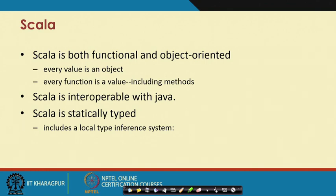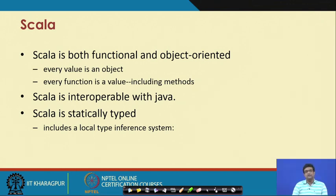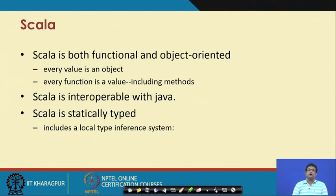Scala is both a functional and object-oriented programming language. Every value in Scala is an object, and moreover every function is a value and hence an object, including the methods which are part of objects. Scala was designed on top of Java, so you will see a lot of derivatives from Java. Scala is a statically typed language just like Java — every variable has a type — but it can do local type inference, so you do not always have to specify the type.